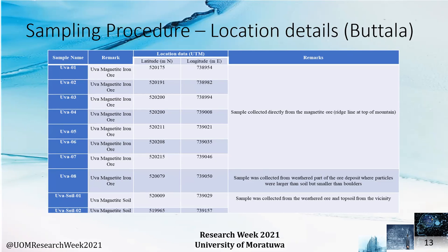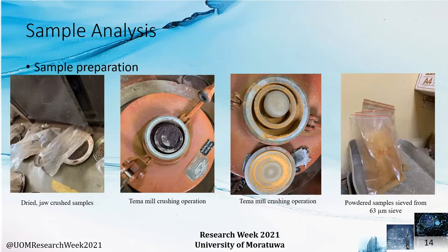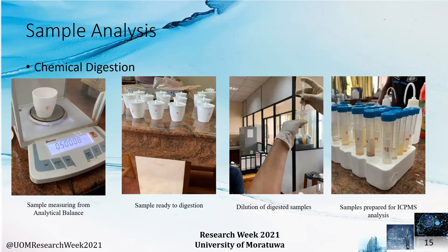After acquiring these 28 samples, we brought them back to the university laboratory at the Department of Earth Resource Engineering. First, the samples were dried, then we used a jaw crusher and TEMA ring mill to reduce the particle size, producing powdered samples at 63 micrometers in size. These 63-micrometer particles were used for the chemical digestion.